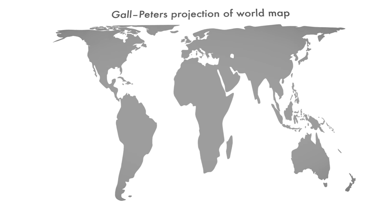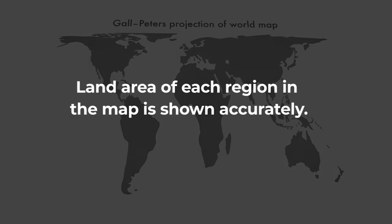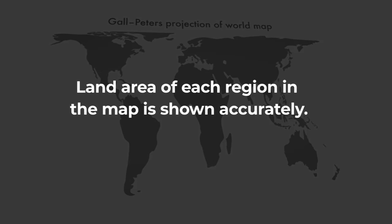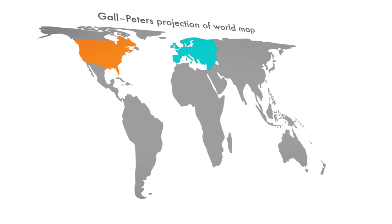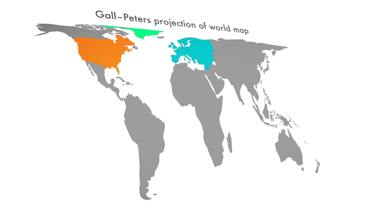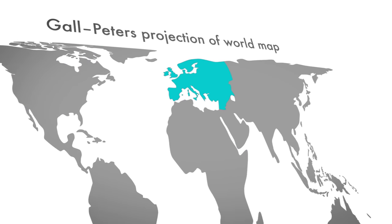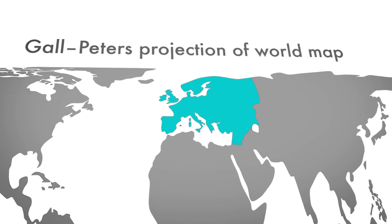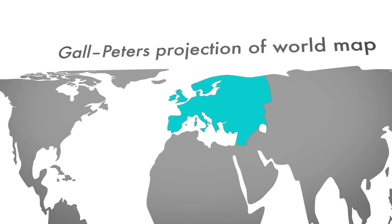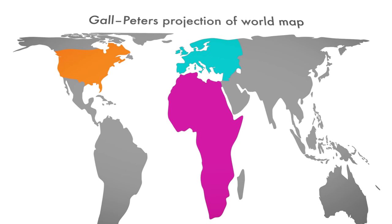If you want to see the true size of countries and continents, you can use the Gall-Peters projection. This is an equal-area projection, which means the land area of each region on the map is shown accurately. Look at the size of Europe, the United States, and even Greenland now — the size comparison with Africa is accurate. Apparently, Europe is not as big as we thought. It may have been a common belief that each state in America was about the same size as an average African country, but that is not the case.